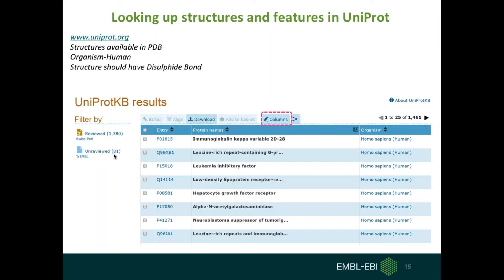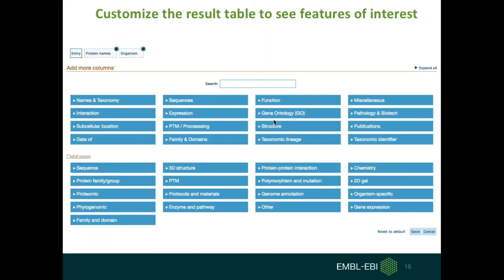You can also look for many more features for this list of proteins. There's a button called 'Columns' — if you click on it, you can choose and see many more features for these proteins. There are many options here regarding subcellular location, sequence, function, taxonomy, phylogeny and so on. You can customize to see the features of interest for the list of proteins.